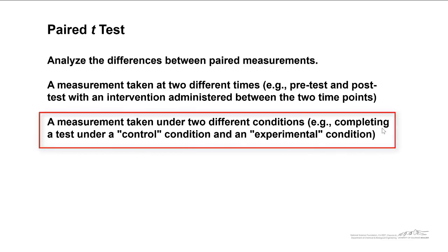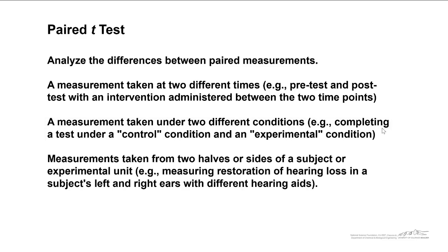A measurement might be taken under two different conditions. For example, completing a test under a control condition and an experimental condition. Measurements taken from two halves or sides of a subject or experimental unit. For example, measuring restoration of hearing loss in a subject's left and right ears using different hearing aids. Obviously, every person is going to respond a little bit differently, and so if you compare in a person the improvement in one ear versus the other, that's usually the best way to do these types of clinical experiments.